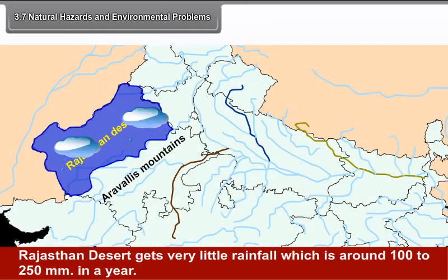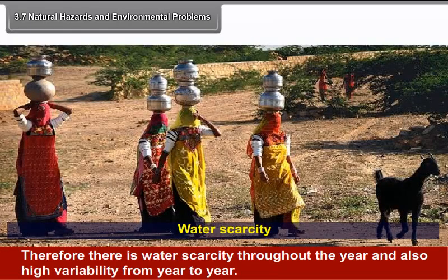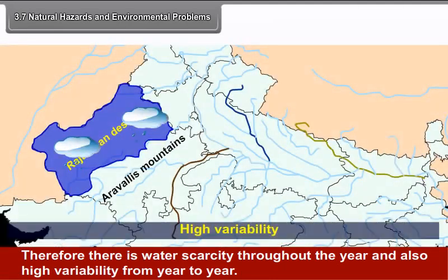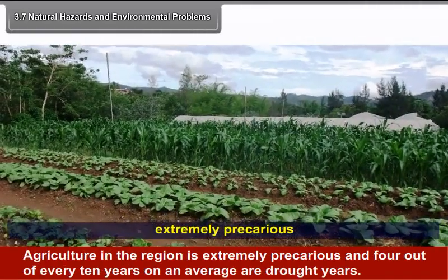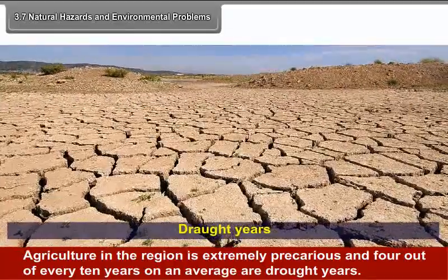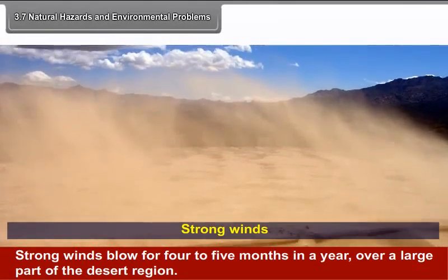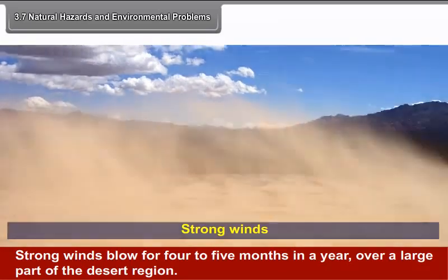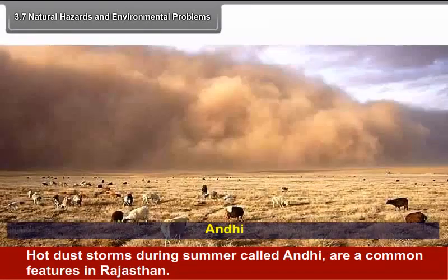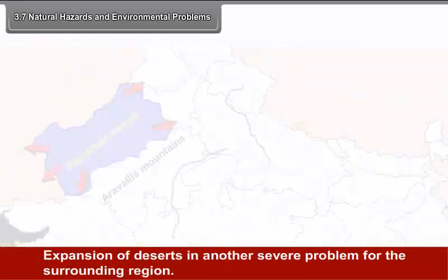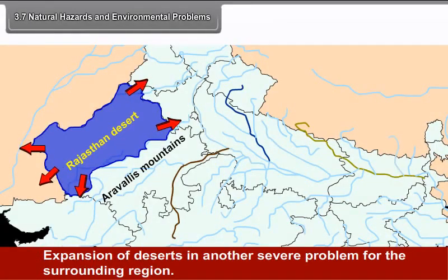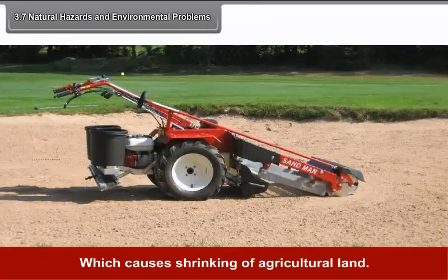3.7 Natural Hazards and Environmental Problems. The Rajasthan desert gets very little rainfall, around 100 to 250 mm per year. Therefore, there is water scarcity throughout the year and high variability from year to year. Agriculture in the region is extremely precarious, and 4 out of every 10 years on average are drought years. Strong winds blow for 4 to 5 months a year over a large part of the desert region. Hot dust storms during summer called Andhi are a common feature in Rajasthan. Expansion of deserts is another severe problem, causing shrinking of agricultural land.